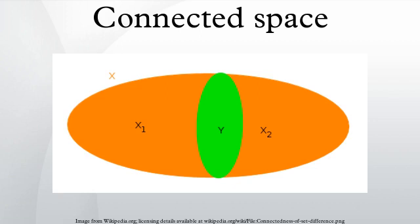An example of a space that is not connected is a plane with an infinite line deleted from it. Other examples of disconnected spaces include the plane with an annulus removed, as well as the union of two disjoint closed disks, where all these examples bear the subspace topology induced by two-dimensional Euclidean space.